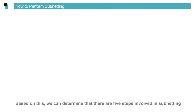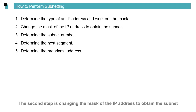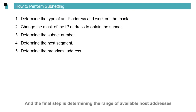Based on this, we can determine that there are five steps involved in subnetting. The first step is determining the IP address type and obtaining the default mask. The second step is changing the mask of the IP address to obtain the subnet. The third step is determining the subnet number. The fourth step is determining the broadcast address. The final step is determining the range of available host addresses based on the subnet number and broadcast address.